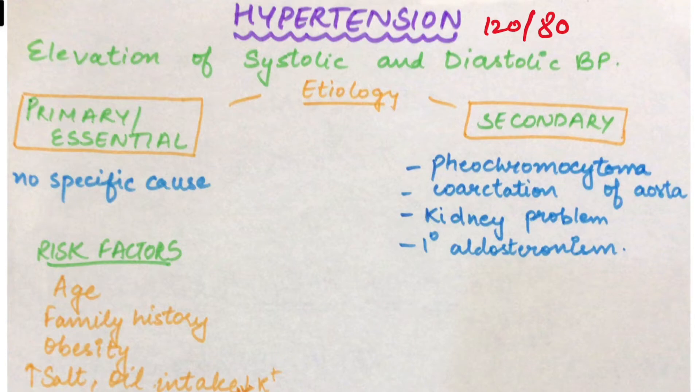What is systolic and diastolic? Systole hota hai jab humara heart muscle contract karta hai — ventricles when they contract, that is known as systole. And ventricles jab relax karte hai, that is known as diastole. Contraction ke vakt arteries ki wall ke oopar kitna pressure daal rahe hai that is systolic blood pressure, and diastole ke vakt kitna pressure lag raha hai that is diastolic blood pressure.